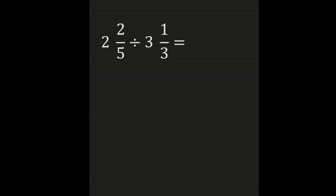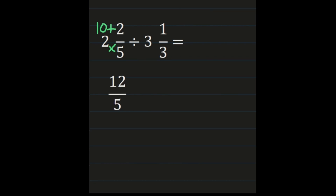Our first example, we have 2 and 2 fifths divided by 3 and 1 third. Our first step is to turn our mixed numbers into improper fractions. We do that by multiplying the denominator times the whole number and then adding our numerator. For 2 and 2 fifths, we multiply 5 times 2, which is 10. Then we add our numerator: 10 plus 2 is 12. 12 becomes our new numerator and our denominator of 5 remains the same.